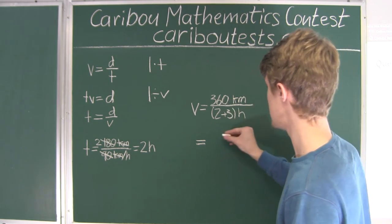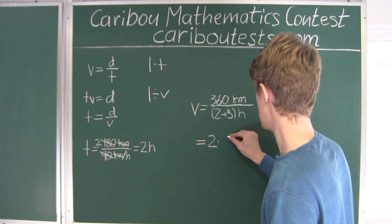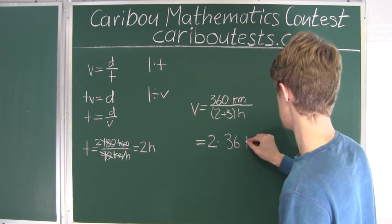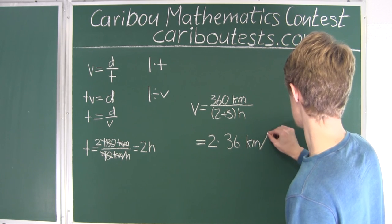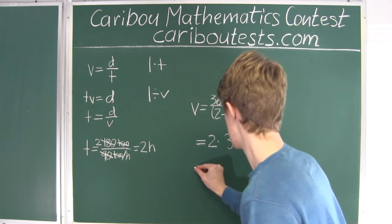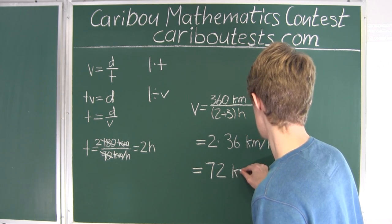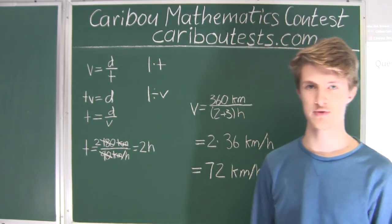So we would have 2 times 36, and then what we have here is kilometers divided by hours. And that is equal to 72 kilometers per hour, which is the average speed for the entire trip.